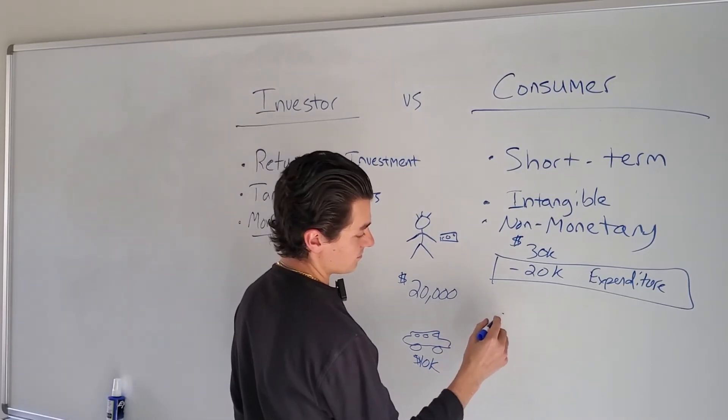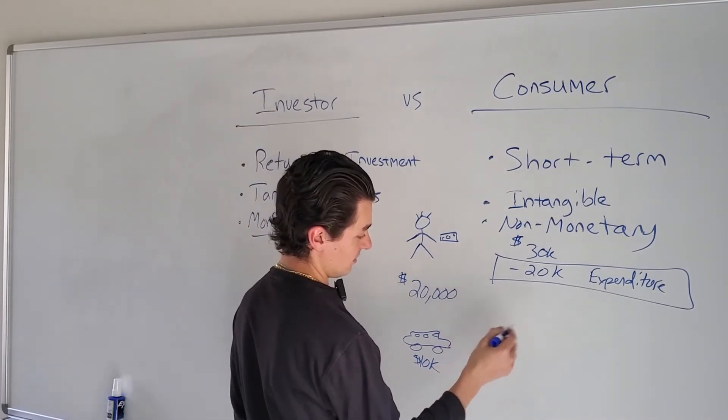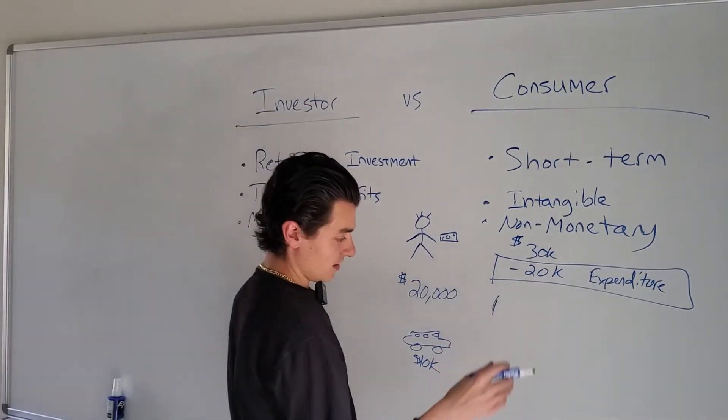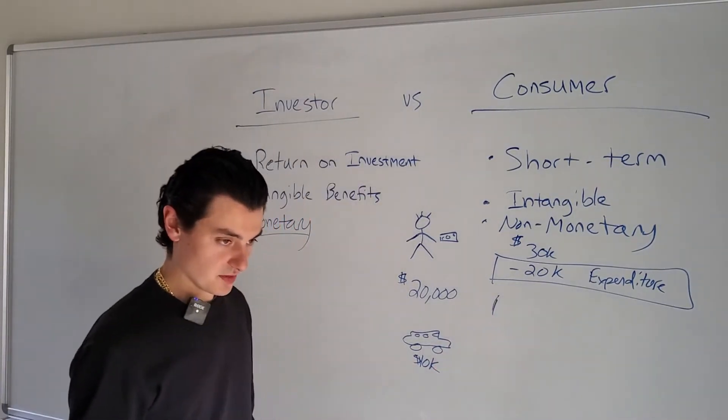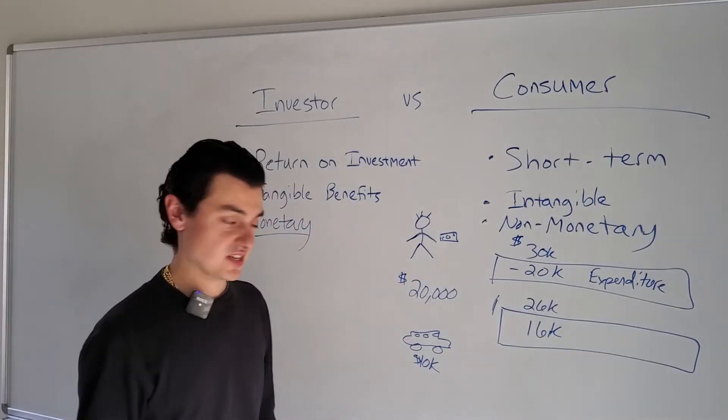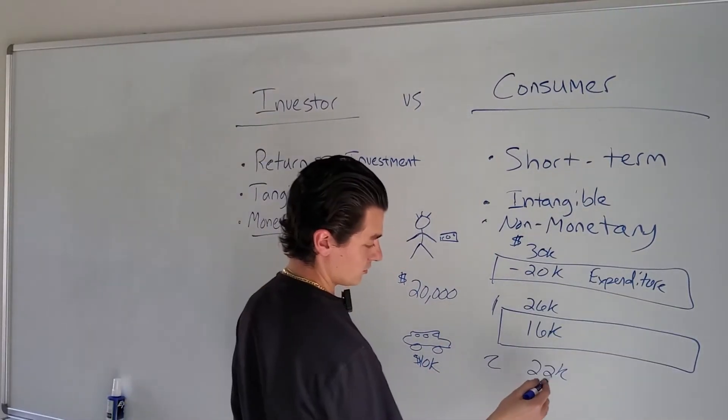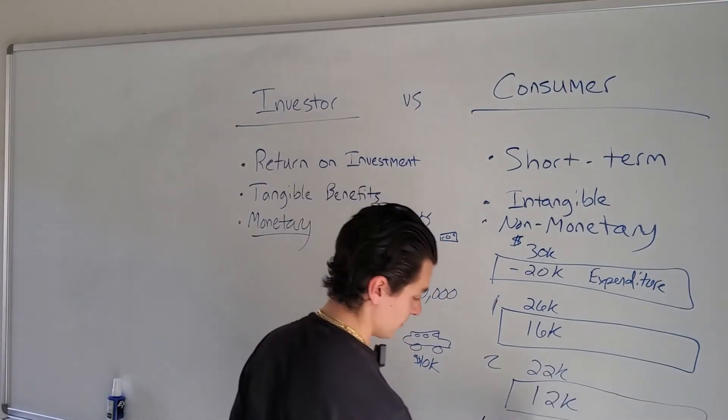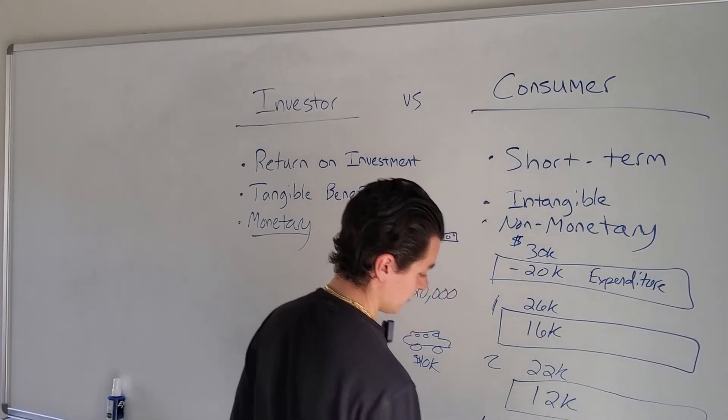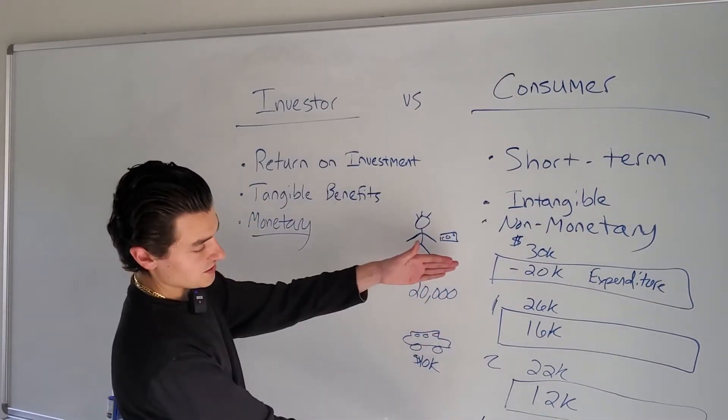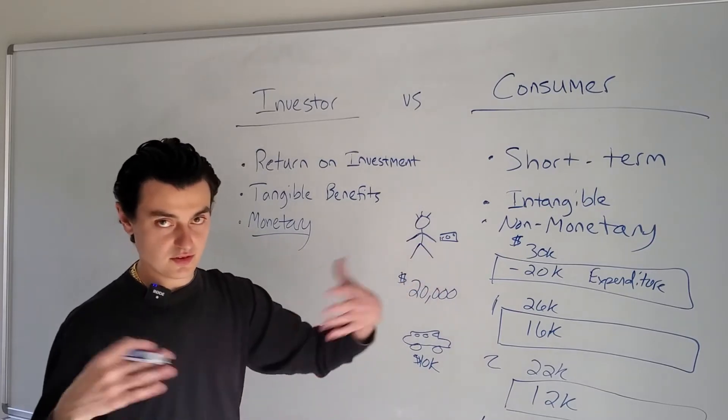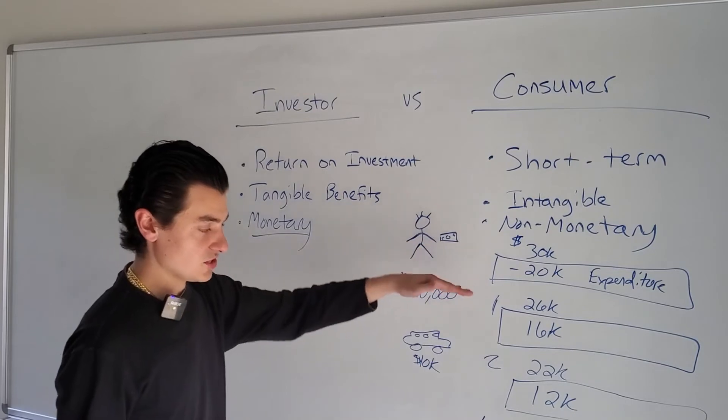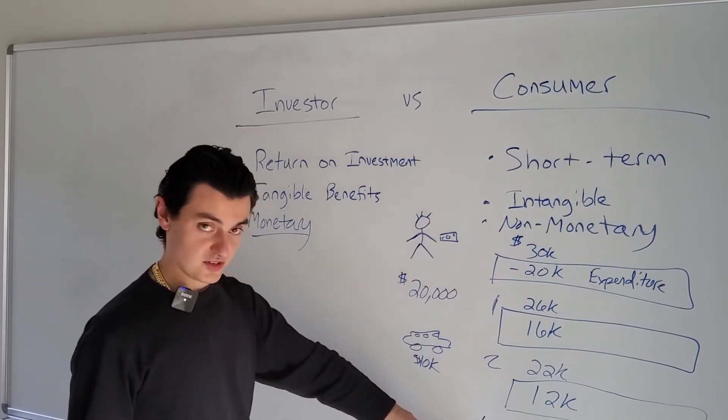Let's say he bought it in year one, drives it off the lot. Within that first year, it loses $4,000. Year two, it depreciates even further down to $22,000. And then by year 10, it has depreciated back down to the $10,000 value of his original vehicle. So over the course of a 10-year period, the $20,000 initial expenditure depreciated in value to be zero by year 10.